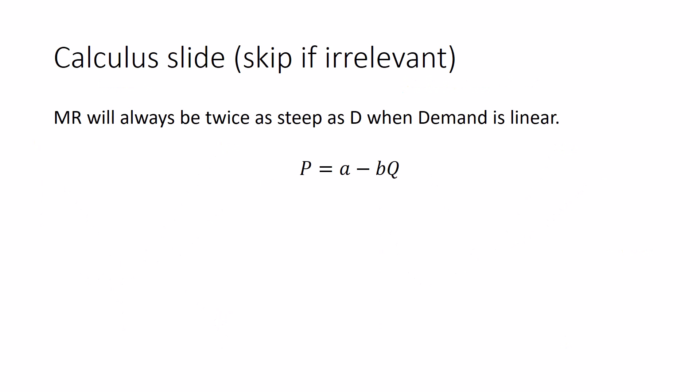How do we know that? Well, if your demand curve has this form, some intercept A minus a slope B times Q. P equals A minus BQ. And total revenue, which is P times Q, is equal to, for P, A minus BQ, and for Q, just Q.